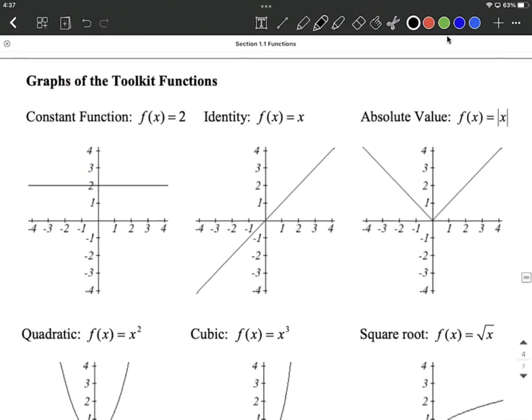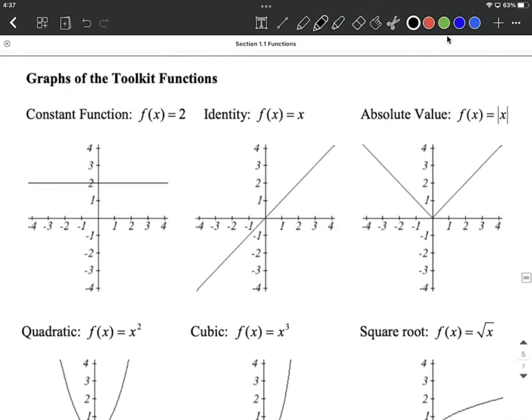And we're going through these kind of quickly, but we want to start familiarizing ourselves with these graphs. The constant graph is simply a horizontal line that goes straight across at whatever value constant we have here. So any value we plug in for x, like if we input a 1, we're going to output a 2.